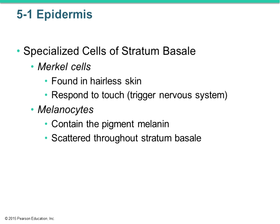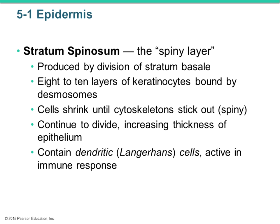There are some specialized cells in the stratum basale, like Merkel cells and melanocytes. Melanocytes contain the pigment melanin, which gives our skin its color. The stratum spinosum — the spiny layer — is basically eight to ten layers of cells dividing from the stratum basale. As the stratum basale divides, cells move up into the stratum spinosum and continue to divide, increasing the thickness of the skin layers.